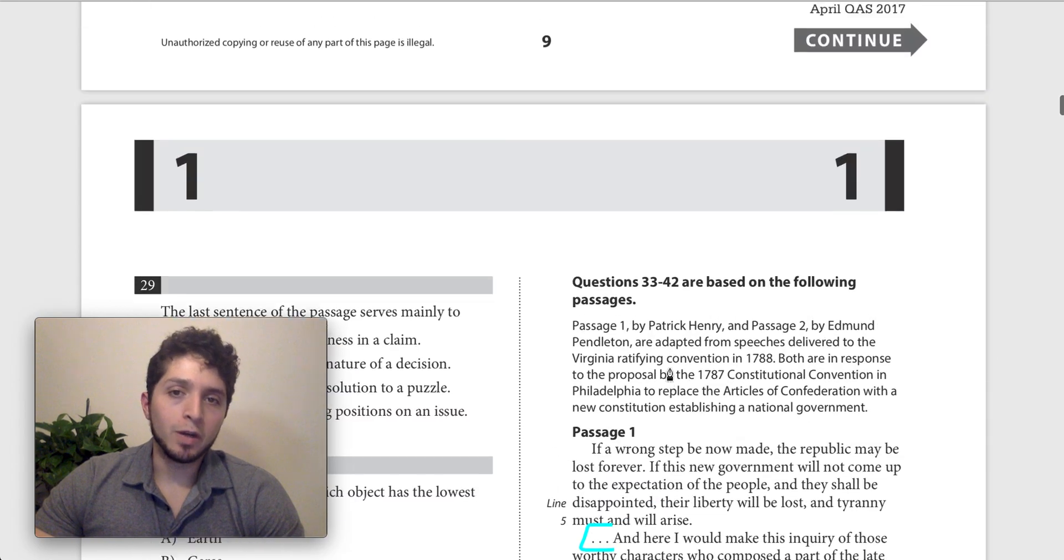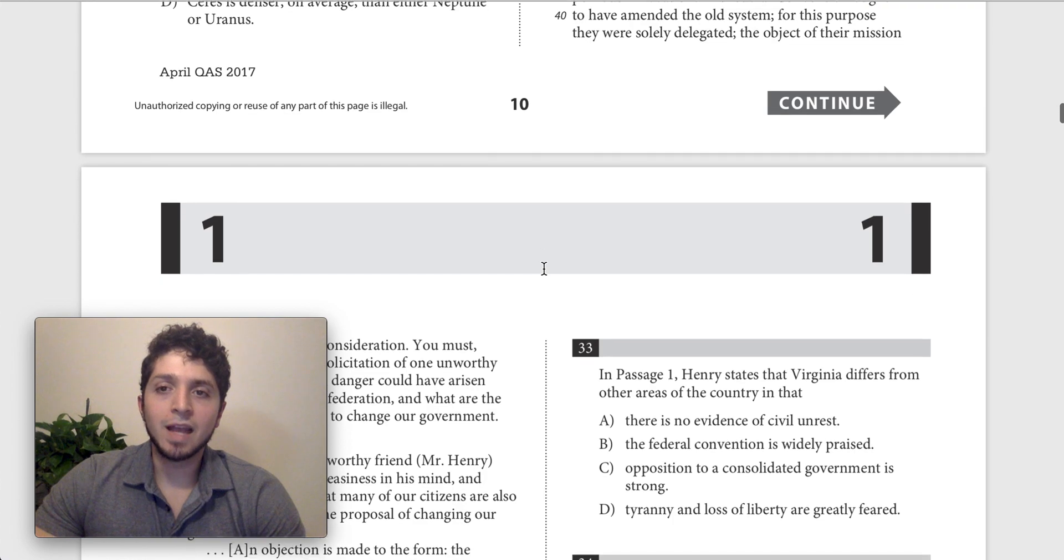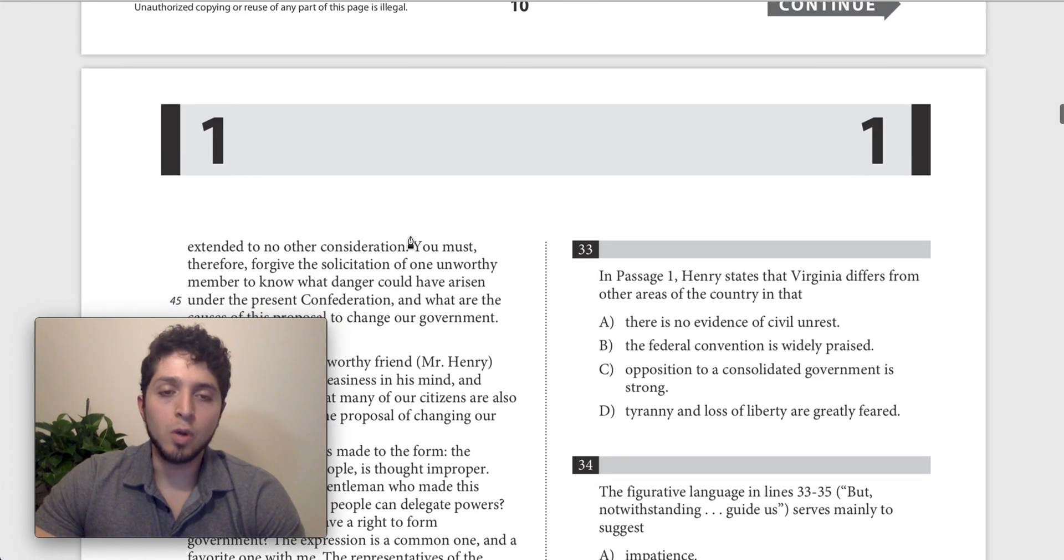Then we have 39-42, which is down here. This says, the federal convention ought to have amended the old system. For this purpose, they were solely delegated. The object of their mission extended to no other consideration.